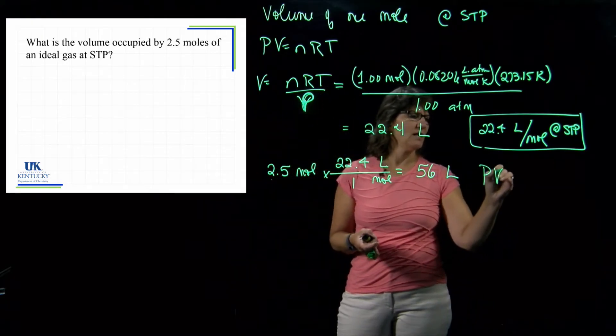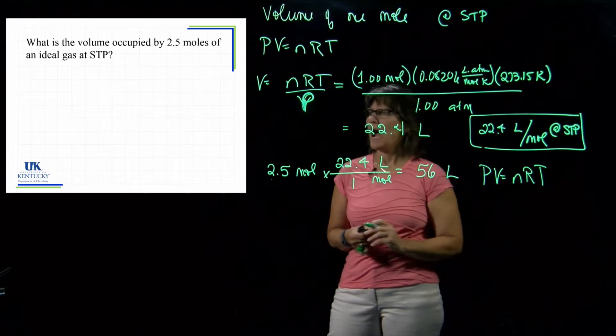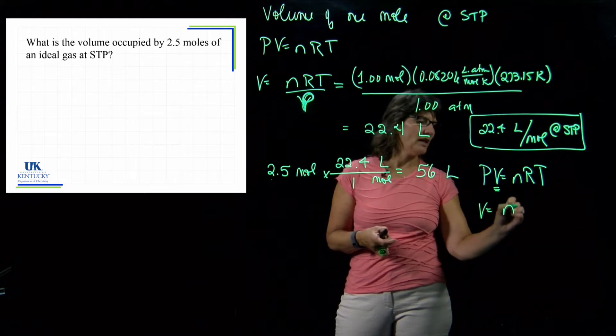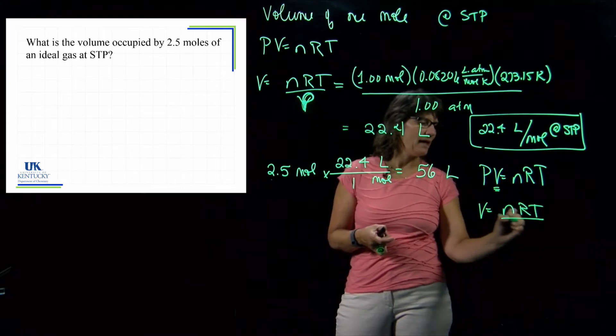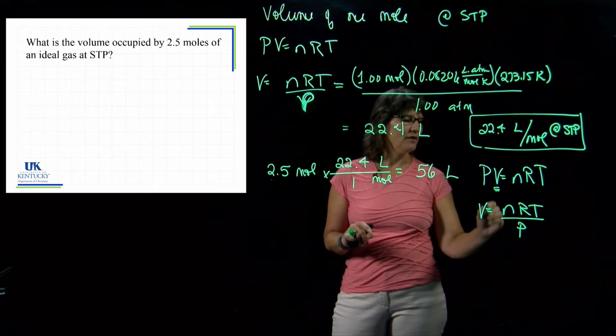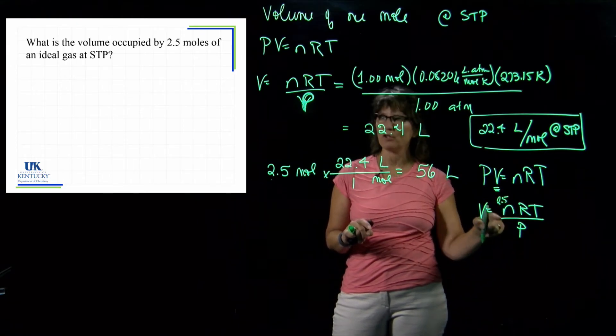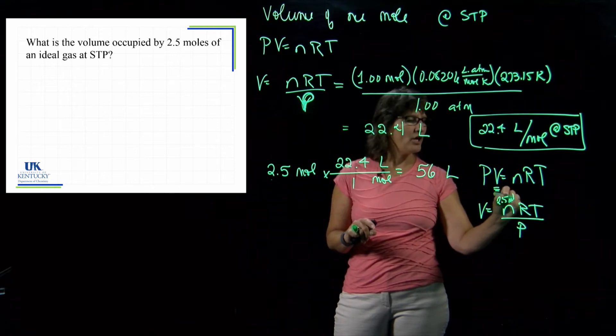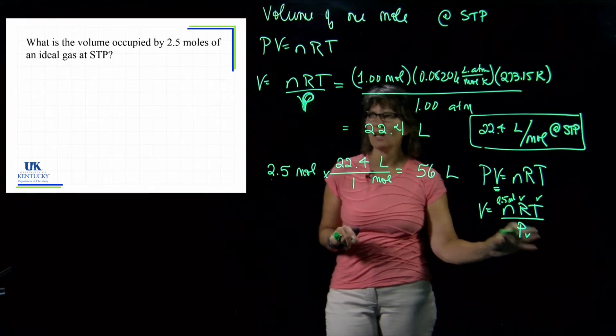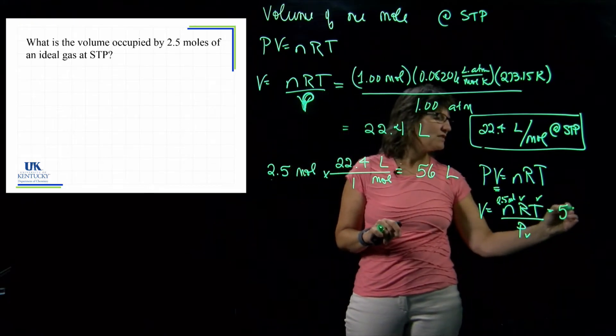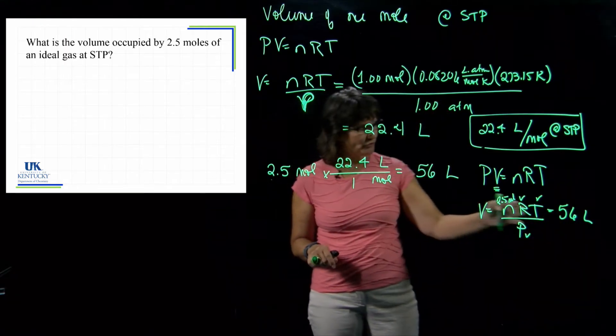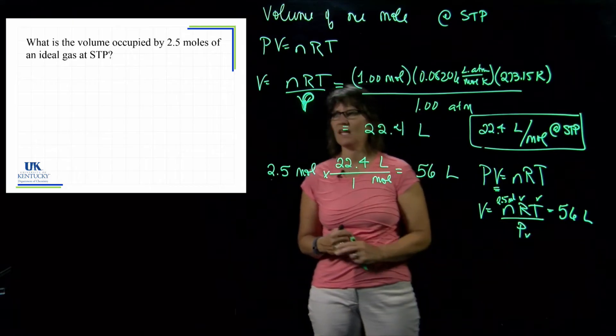But would you have to? If I looked at this problem and didn't have this conversion factor in mind, I might say I could just use PV equals nRT. I'm solving for volume, so V equals nRT over P. I can plug in what I have been given: 2.5 moles, my R, my T, my P. That too would give me a volume of 56 liters.